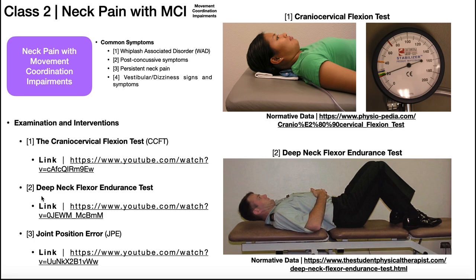In the deep neck flexor endurance test, there's no blood pressure cuff. The person performs a chin tuck and brings the occiput off the table by about an inch and just holds it — this is really an endurance test using the same muscles. The test is terminated if there's excessive activation of the sternocleidomastoid (you don't want much SCM contraction, it should be the deep neck flexors) or if there's a lot of shaking. The longer this position can be held, the better.